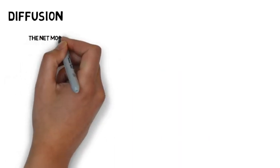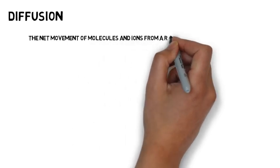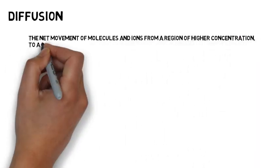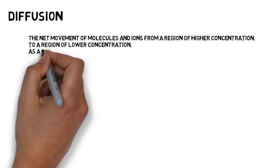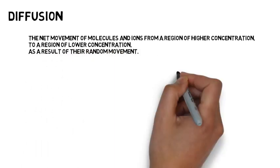Diffusion. Diffusion is the net movement of molecules and ions from a region of higher concentration to a region of lower concentration as a result of their random movement.